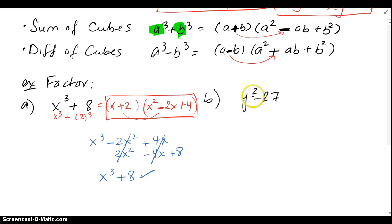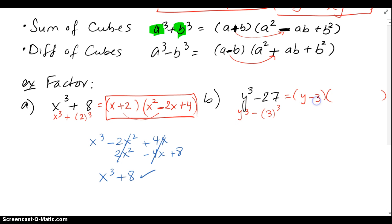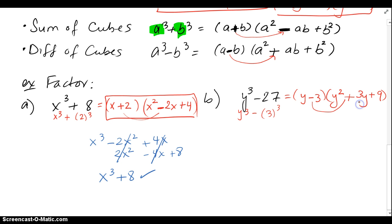For a cubed minus 27, this is really y cubed minus 3 cubed, since 3 cubed is 27. Small parenthesis and then a big one. The small one has the bases: y minus 3. In the big one, y gets squared to go first, 3 gets squared to give 9 at the end, the middle sign switches to plus, and the two pieces squish together to give 3y in the middle. That's our difference of cubes factored.